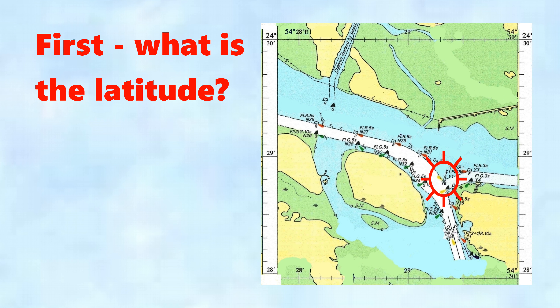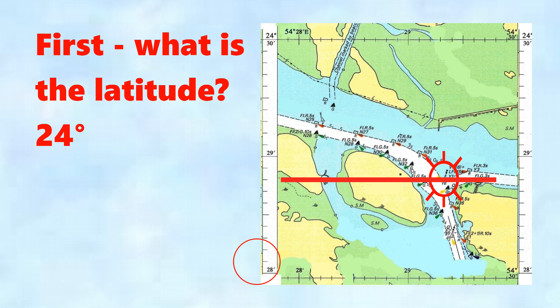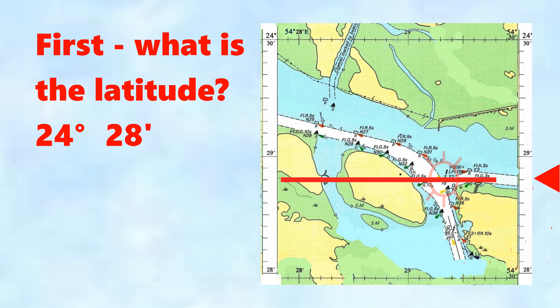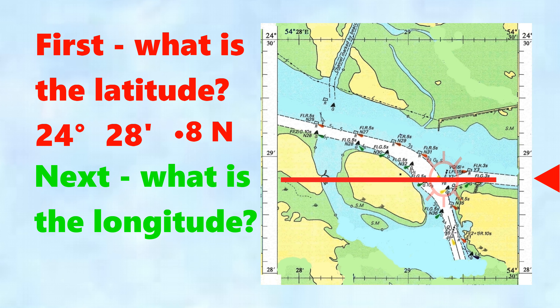Here's a buoy — this is the South Cardinal buoy — and the question is: what is the latitude? We draw in a parallel of latitude. From the top left corner the whole degrees is 24 degrees. Here we can see the minutes, which is between 28 and 29, so we call it 28 minutes. The decimals on the right-hand side show 0.8. So the latitude is 24 degrees, 28 minutes, 0.8 north.